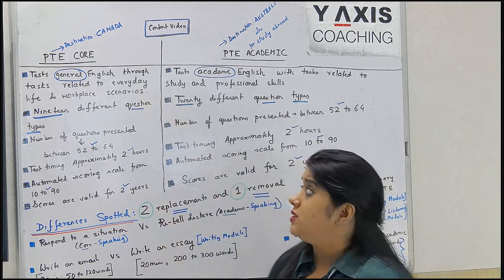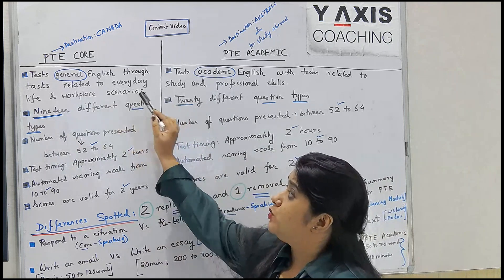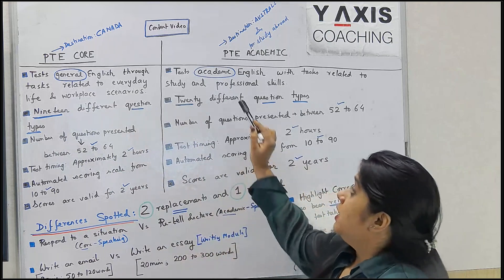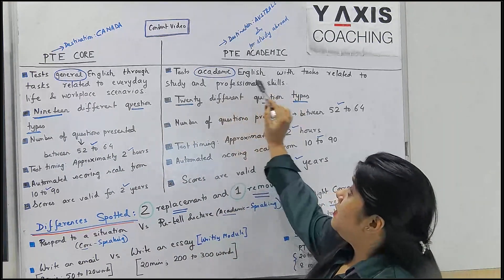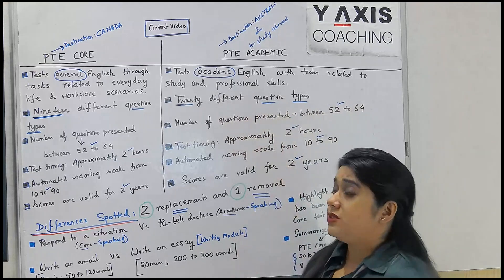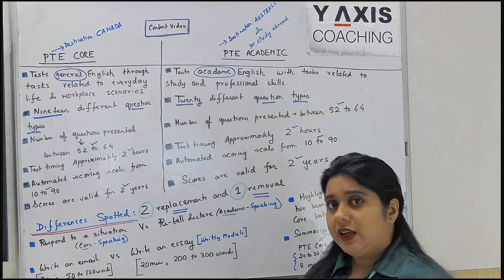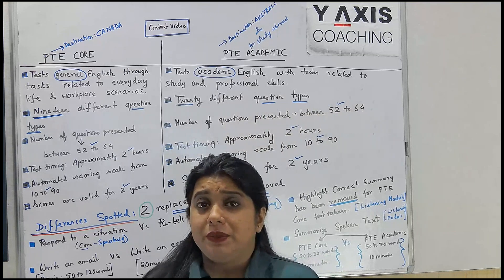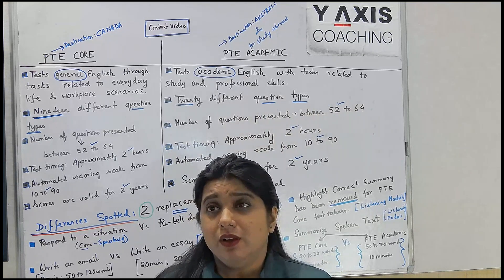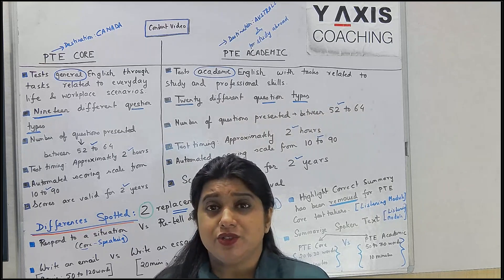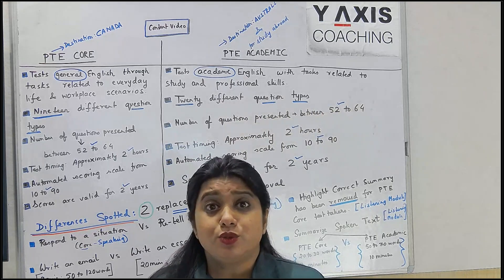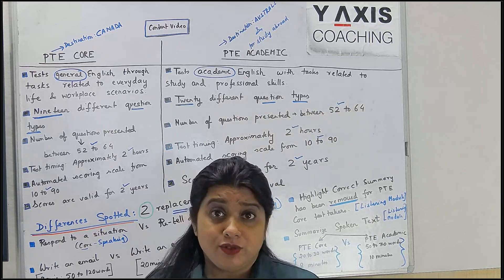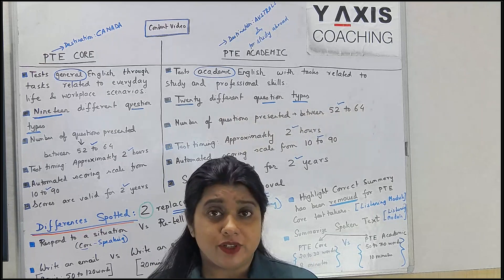The purpose of PT Core is to test general English through tasks related to everyday life and workplace scenarios. On the other hand, PT Academic tests academic English with tasks related to study and professional skills. While PT Core tests general English used in social settings, PT Academic has tasks framed as academic lectures that you have to listen to.